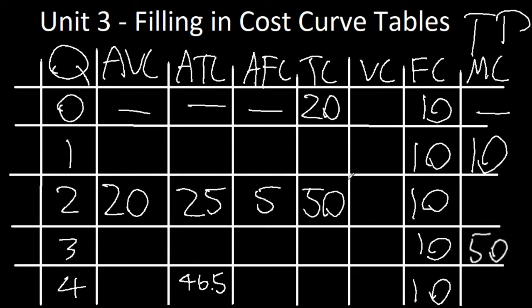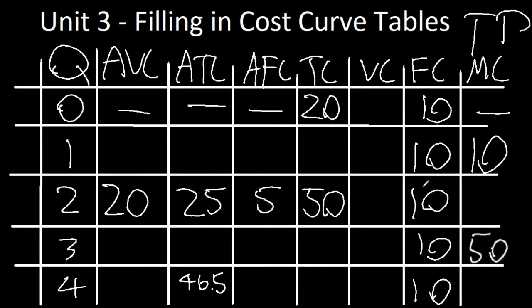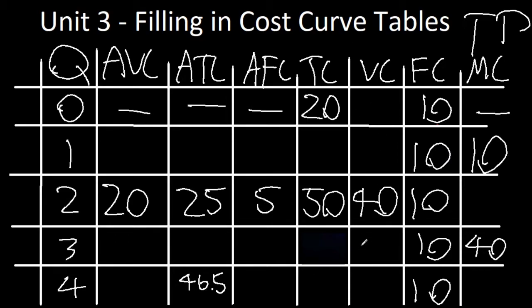From total costs and fixed costs, we can infer what the variable costs are, as TC equals VC plus FC. To solve for VC, we just have to subtract FC from both sides. 50 minus 10 is 40. As you can see, most of these types of questions is just looking for little bits of evidence and creating a conclusion based off of them.